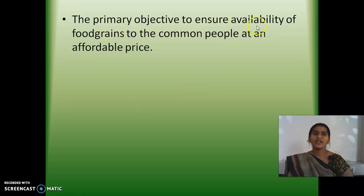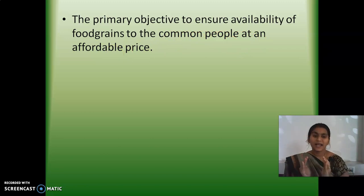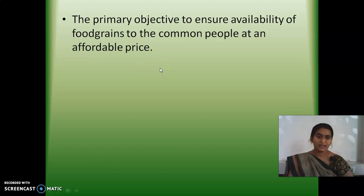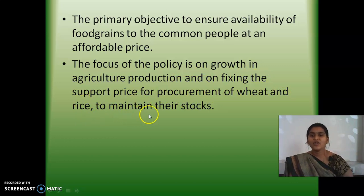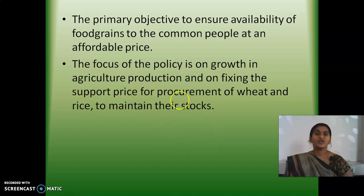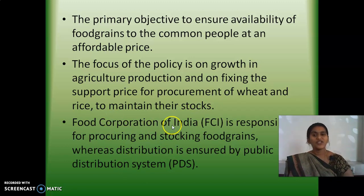The primary objective is to ensure availability of food grains to the common people at an affordable price. The people must get food grains at a reasonable price — that is the main motto of the public distribution system. The focus of the policy is on growth in agricultural production and on fixing the support price for procurement of wheat and rice to maintain their stock. Since India is basically an agricultural country, the government started these policies to provide minimum support to farmers.